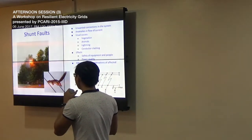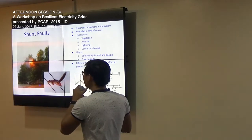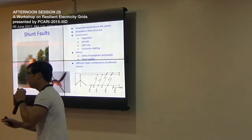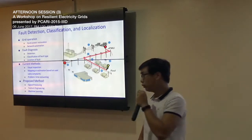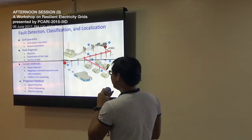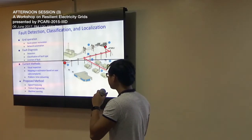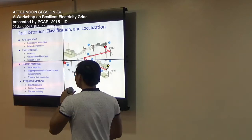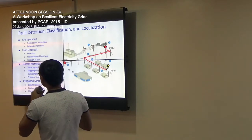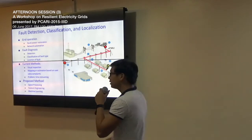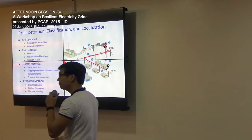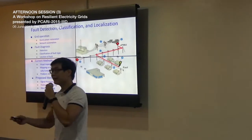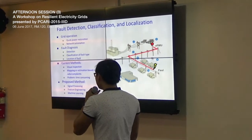There are different types of faults depending on the combinations of affected phases — for example, a spiral creating a short circuit between two phases is a line-to-line fault. In grid operation, we want quick power restoration and network automation, achievable through better fault diagnosis tools: detection, classification, and localization. Current methods include visual inspection, mapping, estimation using customer complaints, or checking the status of protective devices — but the problem is these are time-consuming.